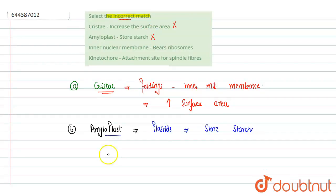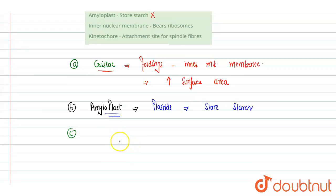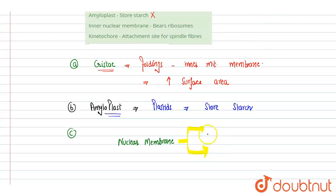The third option is: inner nuclear membrane bears ribosome. The nuclear membrane in eukaryotes surrounds the nucleus and is of two types: the inner nuclear membrane and the outer nuclear membrane. The inner nuclear membrane opens into the nucleoplasm, that is, inside the nucleus.